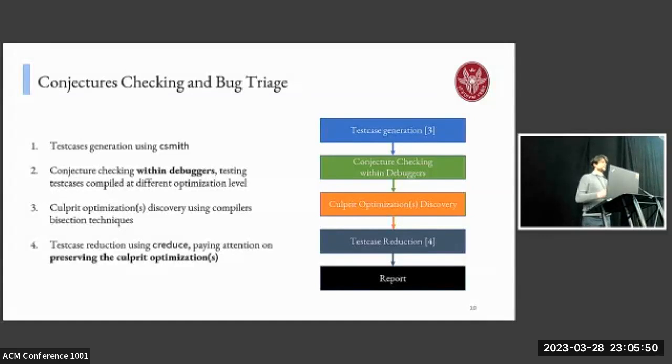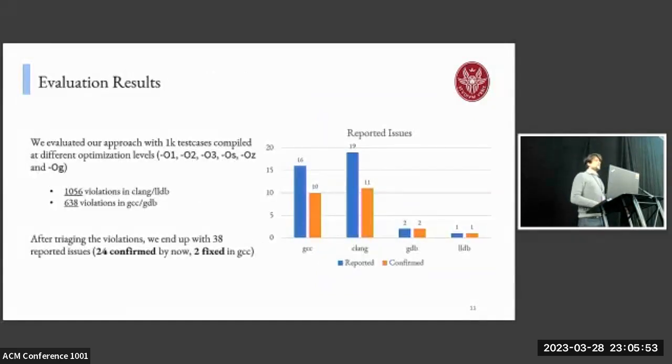We evaluated our approach using 1,000 test cases generated with Csmith compiled at different optimization levels. After the conjecture checking phase, we ended up with over 1,000 violations in the LLVM compiler tool chain and over 600 violations in the GCC GDB tool chains. After triaging the violations, we ended up with 38 reported issues, and 24 have been confirmed by now, and two have been fixed in GCC. Among those not confirmed, either the developers still haven't analyzed them or they need further analysis to be sure about the quality of the report.